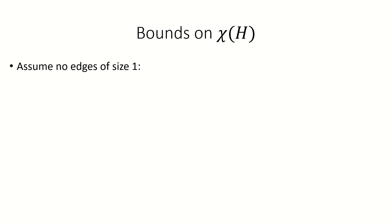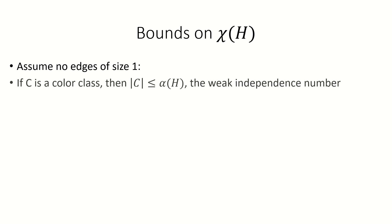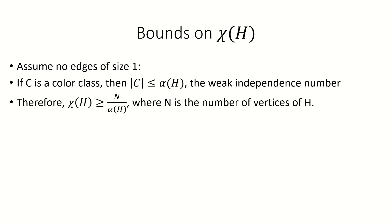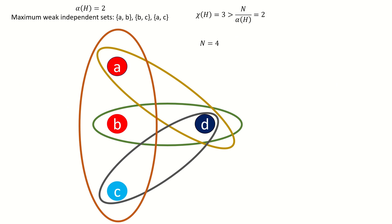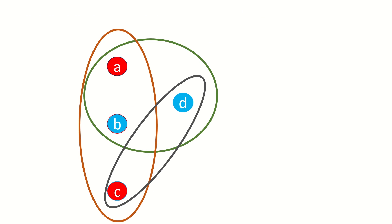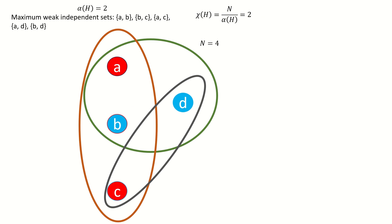Next, like in graph theory, we can find bounds for the chromatic number of a hypergraph using certain parameters of the hypergraph. We'll start by assuming that our hypergraphs do not have edges of size 1. Since every color class is a weak independent set, no color class can have size greater than the weak independence number of the hypergraph. So, if we're given the weak independence number of a hypergraph H with n vertices, then we can say that the chromatic number must be greater than or equal to n divided by the weak independence number. Here's an example of a hypergraph whose chromatic number is greater than n divided by the weak independence number. Notice that equality between the chromatic number and n over the weak independence number means we can partition the vertices such that each part is a maximum weak independence set.